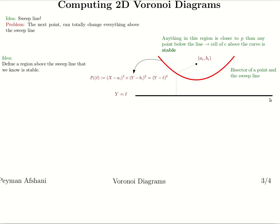In other words, no matter which point we encounter below the sweep line — it could be here, here, or wherever — any point in this region above the bisector is going to be closer to (Ai, Bi) than to that new point. This region is stable. No matter what point we encounter as the next event point, nothing inside this region will change because those points are closer to this site. The union of all these stable regions forms the stable region used in the algorithm.